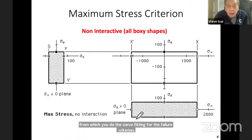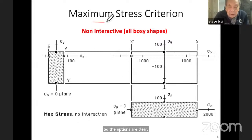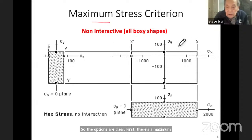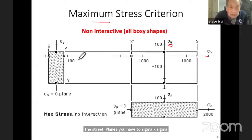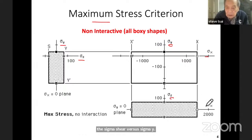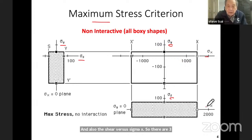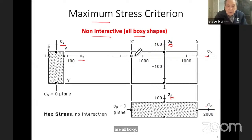The options are clear. First, there's a maximum stress criterion, and you can just use the three planes. You have sigma x, sigma y, and also sigma shear versus sigma y, and shear versus sigma x. So there are three orthogonal planes to which you can express your failure criteria. This is the non-interactive — they are all boxy. You just go through the strength parameters as you measure them.